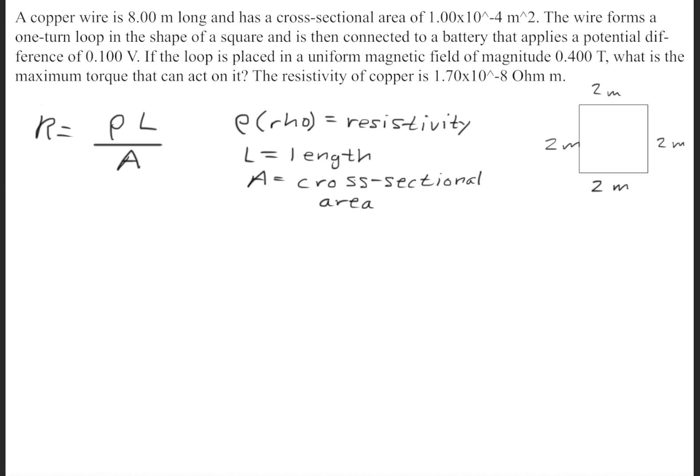Now we need to use the resistivity formula, and that is the resistance is equal to the resistivity, which is the symbol rho, times the length divided by the cross-sectional area.